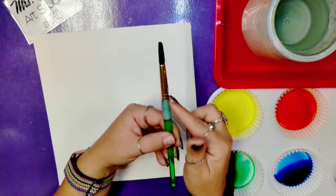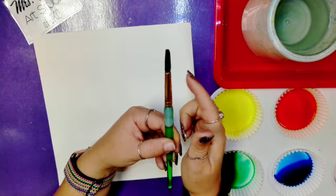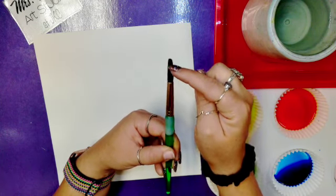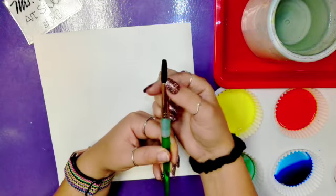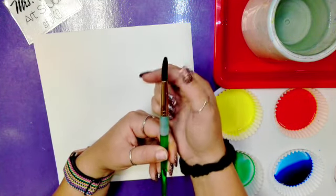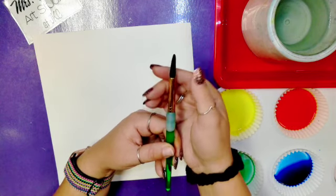Now this gold part, we want to keep this gold part shiny and clean, so we never, never dip this gold part into our paint—only the tip of our brush. So this is the tip of our brush, this is the part we will dip into the paint, and this is the part we will paint with.